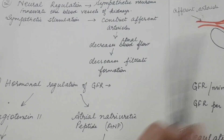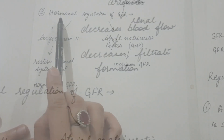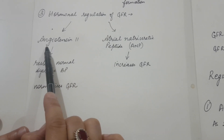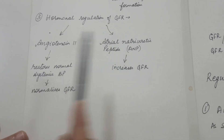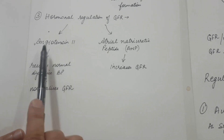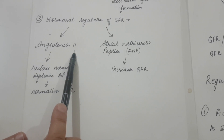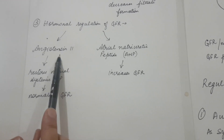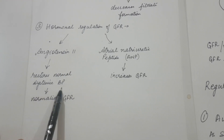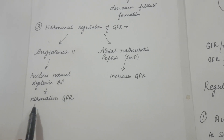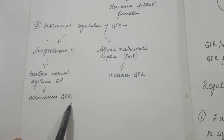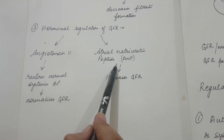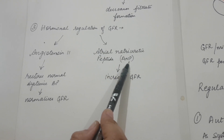Which means filtrate formation will be reduced. Next is hormonal regulation of GFR. There are two hormones which control it. One is Angiotensin 2, which is a hormone produced locally within the kidneys. It restores the normal systemic blood pressure, which normalizes GFR. The other hormone is Atrial Natriuretic Peptide, or ANP, which is produced in the atria.